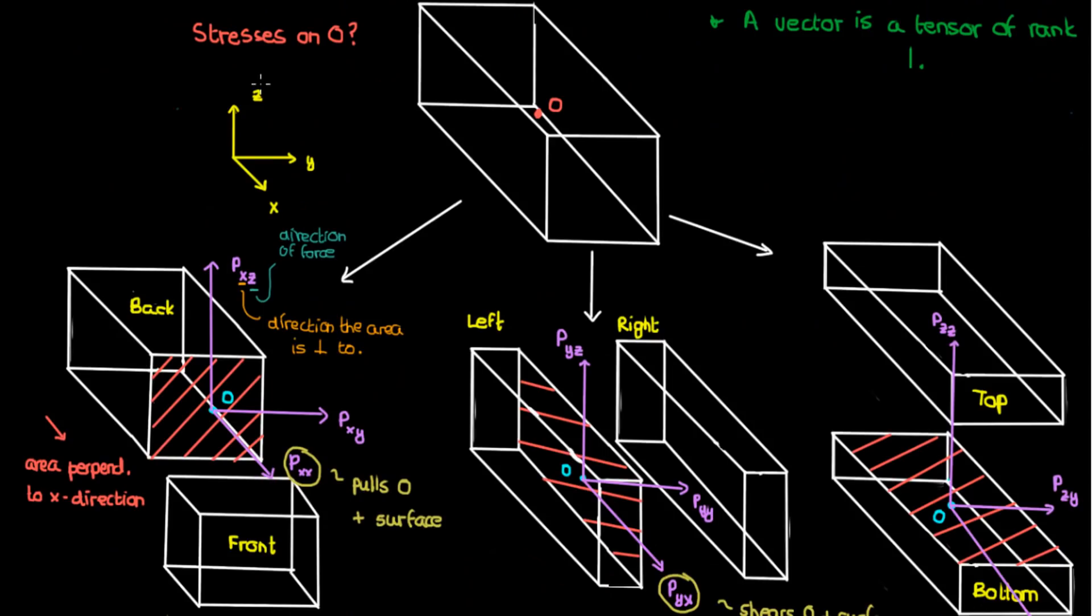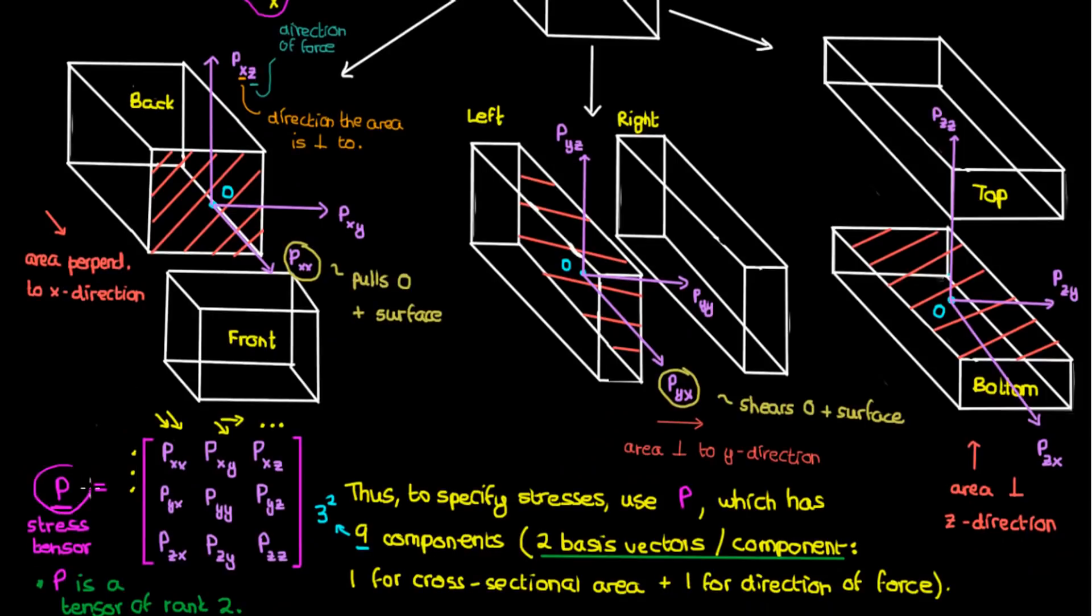Let's go now to our stress tensor, our rank 2 tensor. This stress tensor has to do with the stresses that act on the steel beam and cause it to deform in certain ways. Now last time I used the xyz coordinate system to write an expression for the stress tensor p.